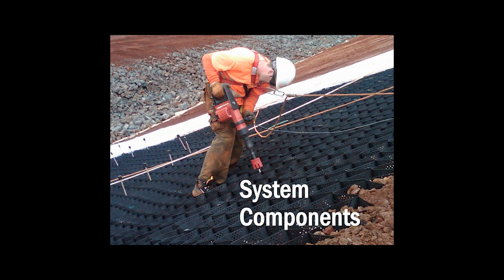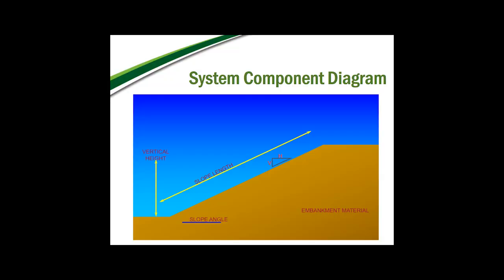The system components are all of the supporting accessories that help the GeoWeb system protect the slope. I have a simplified diagram here to show how the different system components interact with the GeoWeb panels to form a complete system. To begin, we have our slope with some standard dimensions. The first thing to go down is the geosynthetic layer, which can be a geotextile, a geomembrane, geogrid, or any similar product. Then the GeoWeb panels are put in place.